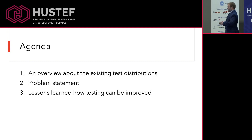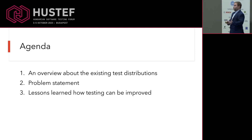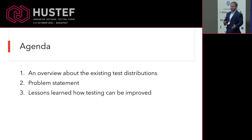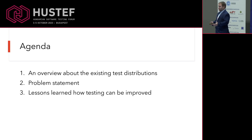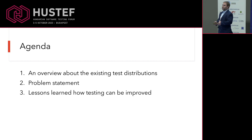As the first appetizer, we will speak about the different test distributions, because not only the testing pyramid is existing, and you will see what kind of test distributions you can utilize in your daily testing. Also, at the second stage, we will reach a problem statement — why different test distributions are not suitable for us, what are the different challenges and problems that can arise during working.